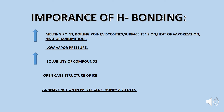Importance of hydrogen bonding: due to hydrogen bonding, melting point, boiling point, viscosity, surface tension, heat of vaporization, and heat of sublimation all increase, resulting in lower vapor pressure. The solubility of compounds also increases due to hydrogen bonding. The open cage structure of ice is due to hydrogen bonding, and the adhesive action in paints, glue, and dyes is also due to hydrogen bonding.